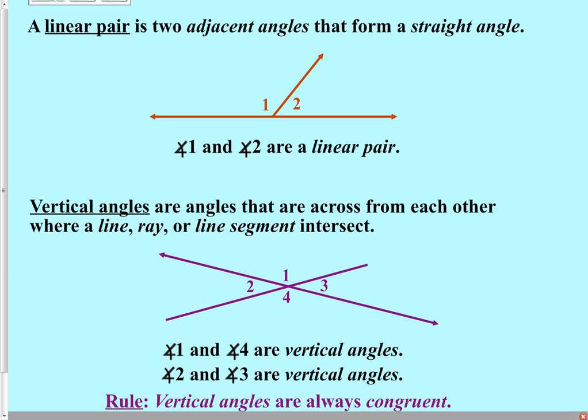Vertical angles is another term some students still struggle with. Vertical in geometry does not mean up and down as in everyday English — you need to reprogram your brain. Vertical in geometry means across from each other at an intersection, and the basic rule is that vertical angles will always be congruent with each other in that diagram.